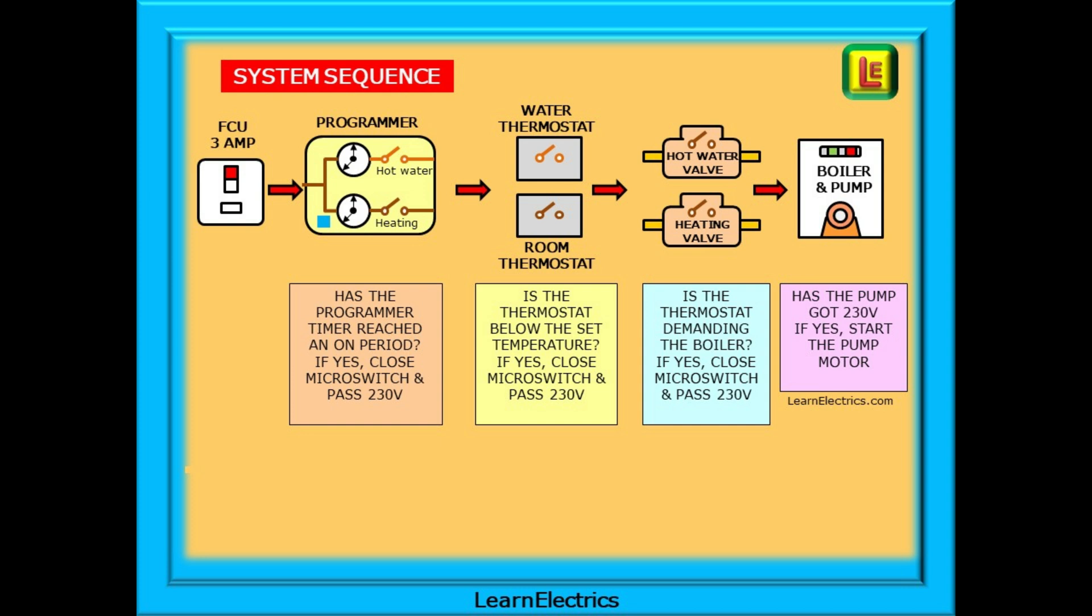We can start at the fused connection unit, the point at which electricity enters the system. We have a programmer to set the on and off periods. And the question is, has the programmer timer reached an on period? If yes, close the microswitch and pass 230 volts to the thermostats. There are separate thermostats for water and heating and again, a question. Is the thermostat below the set temperature? If yes, close the microswitch and pass 230 volts to the valves.